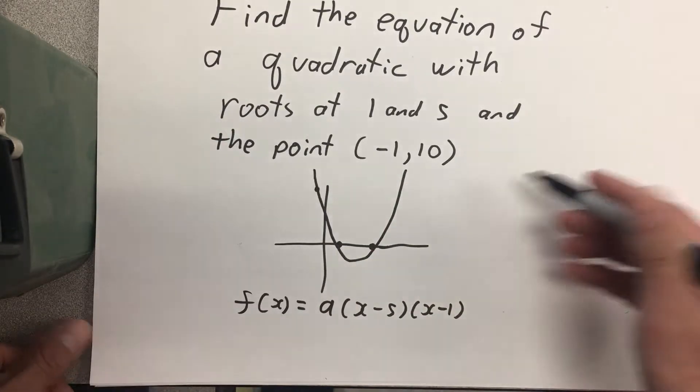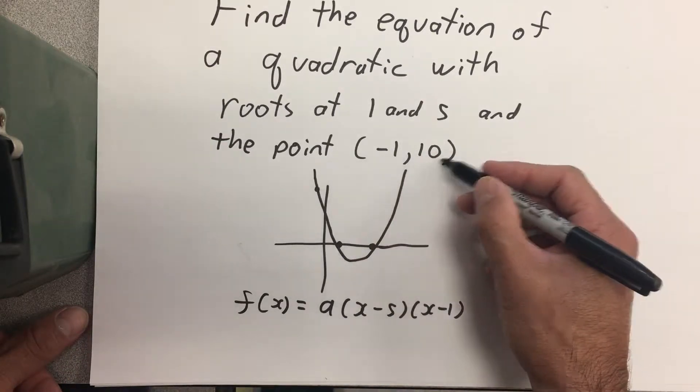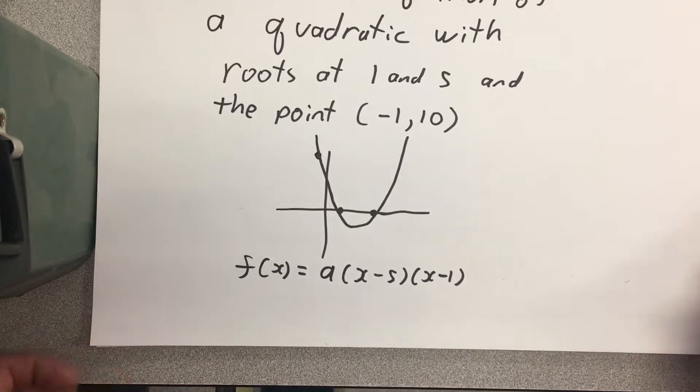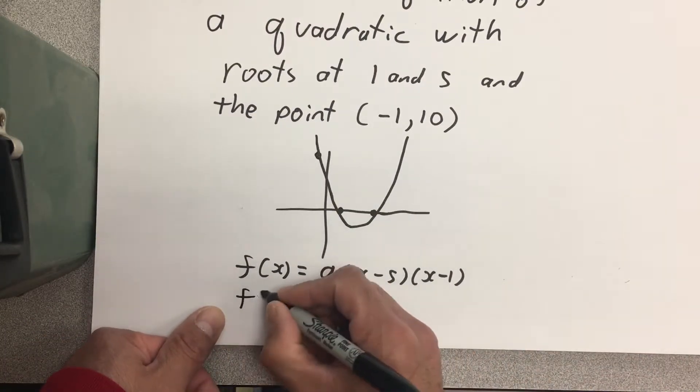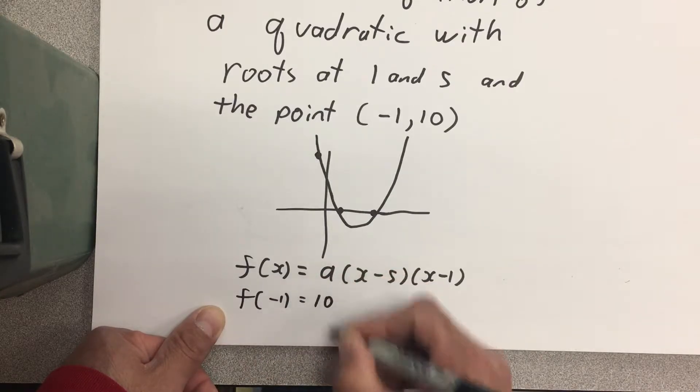In addition to that, the point (-1, 10) is on the parabola. So the second equation I can write in Lagrange notation is that when I evaluate my function at -1, it's equal to 10.